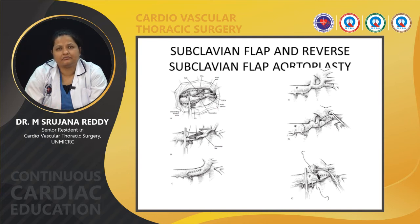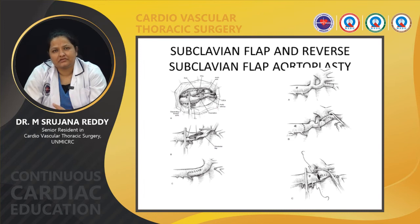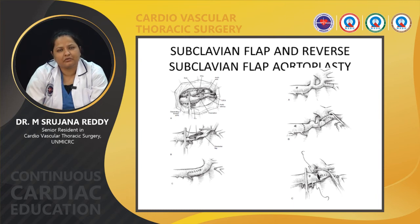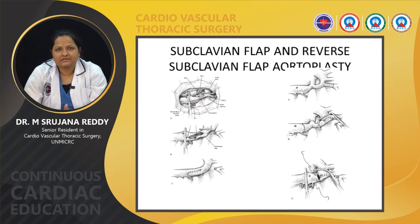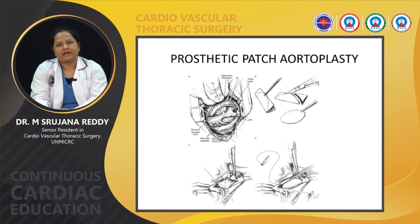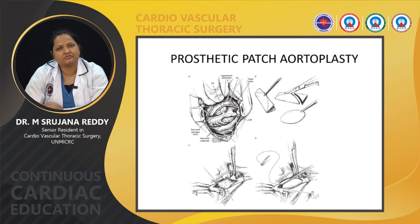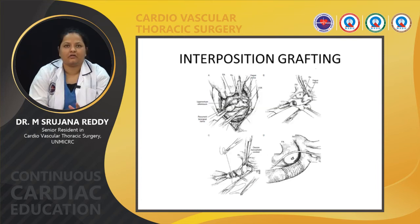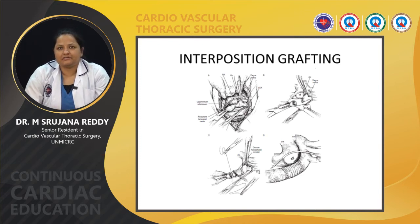The subclavian flap aortoplasty and reverse subclavian flap aortoplasty have been described, wherein the left subclavian artery is ligated, the incision is extended proximally, and the subclavian flap is brought down and sutured. The reverse subclavian flap aortoplasty is used in cases with distal isthmus and distal arch hypoplasia. Prosthetic patch aortoplasty involves a linear incision across the coarctation site with anterior augmentation using a prosthetic patch graft.